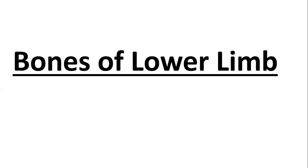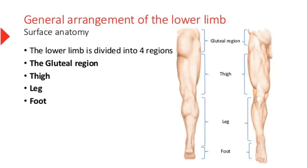Today we will be doing bones of lower limb. Looking at the surface anatomy of the lower limb, we have the gluteal region, the anterior surface, and the lower limb posteriorly. So we have the gluteal region, then the thigh, then the leg, and at the end we have the foot. Here is the knee joint present.